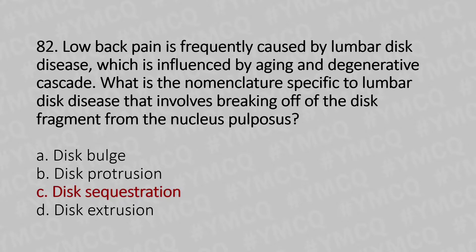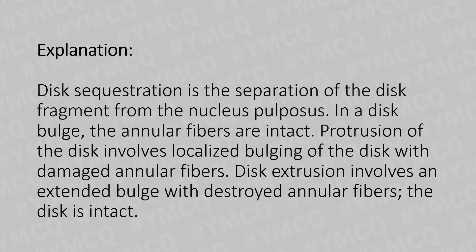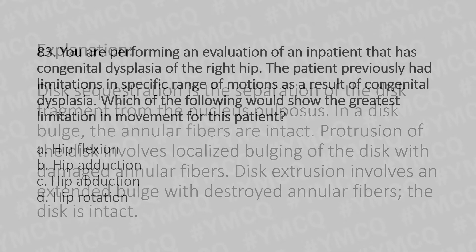The answer is Option C: disc sequestration. Disc sequestration is the separation of a disc fragment from the nucleus pulposus. In a disc bulge, the annulus fibers are intact. Protrusion involves localized bulging of the disc with damaged annulus fibers. Disc extrusion involves an extended bulge with destroyed annulus fibers, while the disc remains intact.